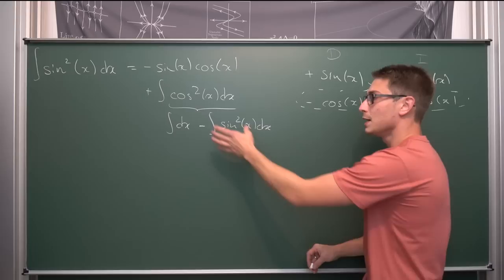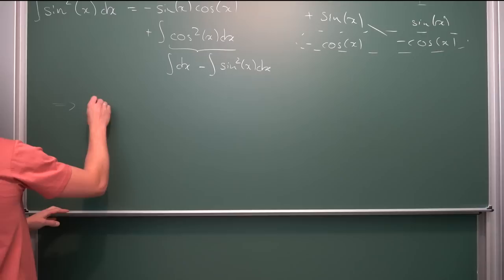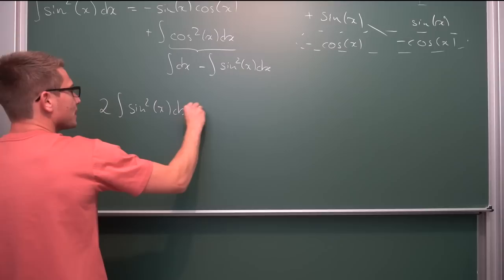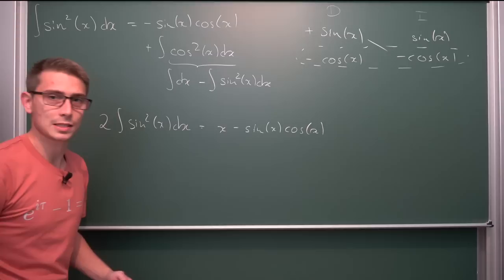This right here is our original integral that we want to evaluate. So why not add it on both sides, giving us two times our integral that we want to evaluate, meaning two times the integral of the sine squared of x dx is equal to, well, we are going to get x and then minus sine of x times the cosine of x.